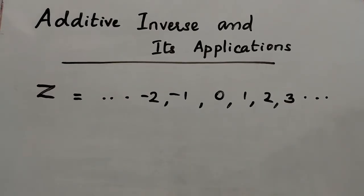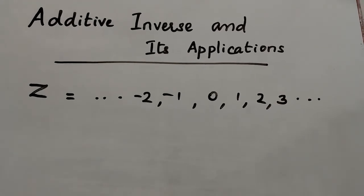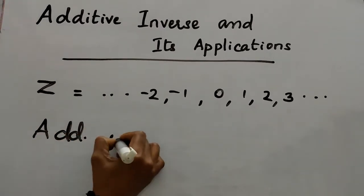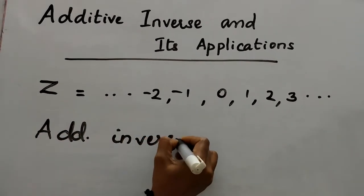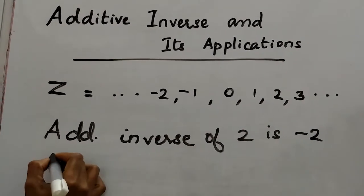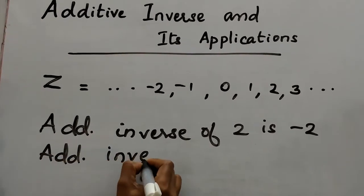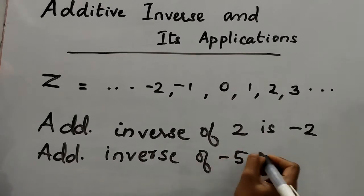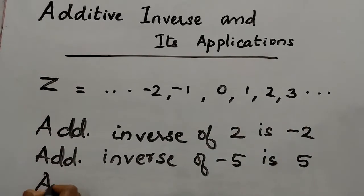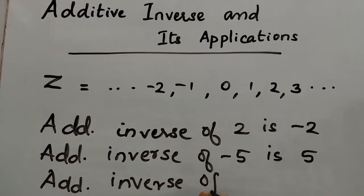The additive inverse of any integer is its corresponding opposite integer. For example, the additive inverse of 2 is negative 2. Another one: the additive inverse of negative 5 is 5. The additive inverse of 0 is 0.